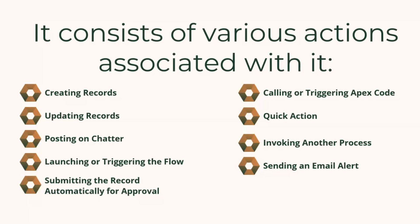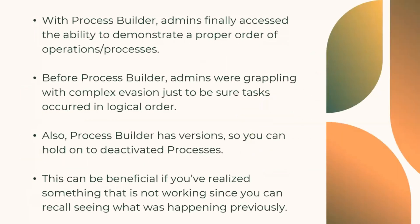Process builder consists of various actions associated with it, like creating records, updating records, posting on Chatter, launching or triggering a flow, submitting the record automatically for approval, calling or triggering Apex code, quick actions, invoking another process, and sending an email alert. With process builder, admins finally gained the ability to demonstrate a proper order of operations.